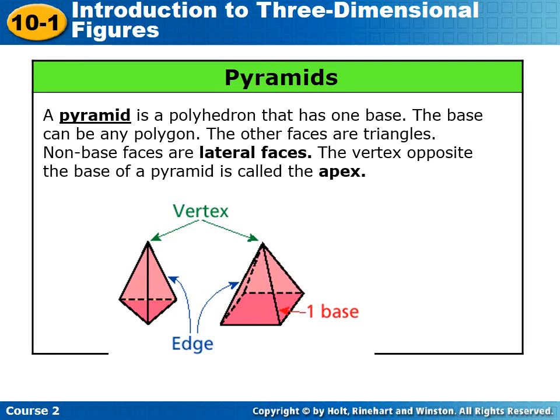Here are our pyramids. With a pyramid, it's a polyhedron with only one base. And again, that base can be any polygon. The other faces on our pyramid are all going to be triangles. Those are our lateral faces. The triangles meet at a single vertex that is opposite from the base of the pyramid, and that vertex is often called the apex.